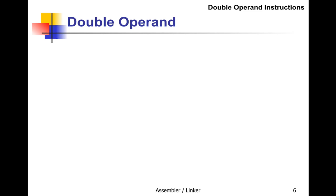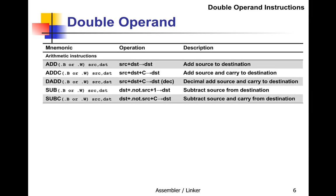Let's look at the double operand instructions. On the left is the mnemonic — the way you write the instruction. The operation is in the middle, and a short description is on the right. All of them have a .b or .w suffix, meaning they can operate on a byte or a word, and they have source and destination addresses. First is ADD: source plus destination goes to destination. ADD with carry is source plus destination plus the carry bit into the destination. DADD stands for decimal add — binary coded decimal — adding source plus destination plus carry into the destination.